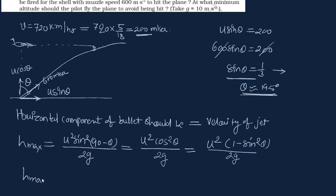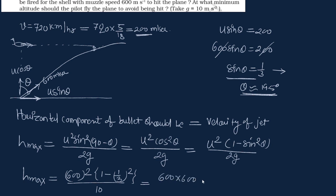So H_max equals u² into (1 − sin² θ) divided by 2g, since cos² θ = 1 − sin² θ. Substituting: u² is 600², and sin θ = 1/3, so sin² θ = 1/9. This gives 600 × 600 × (1 − 1/9) = 360000 × 8/9, divided by 2g where g = 10. Cancelling 10s and simplifying: 36000 × 8/9 = 32000.